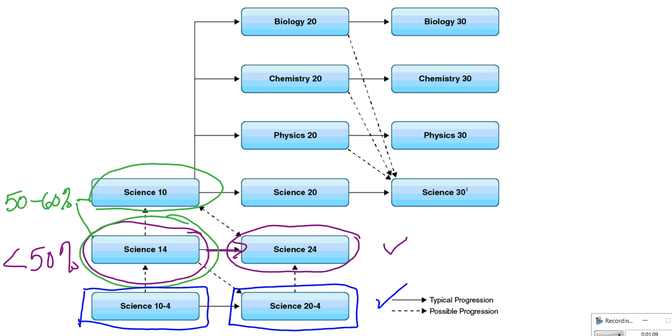If your overall mark is above 60% in Science 9 and you are competent in math, then you should enroll in Science 10.